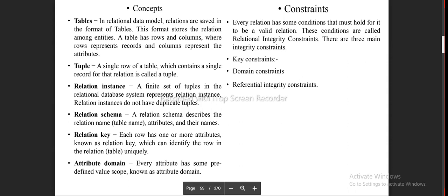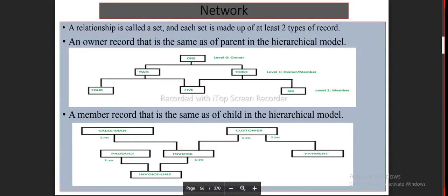Constraints: Every Relation has some conditions that must hold for it To be a valid relation. These conditions are called Relational Integrity Constraints. There are three main Integrity Constraints: Key Constraints, Domain Constraints, Referential Integrity Constraints. Page 56 of 270.